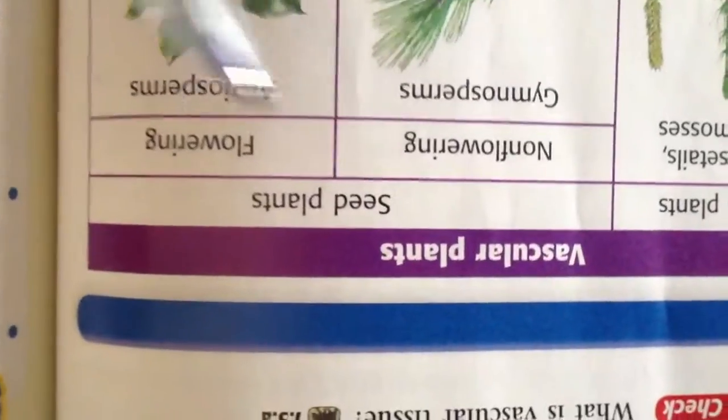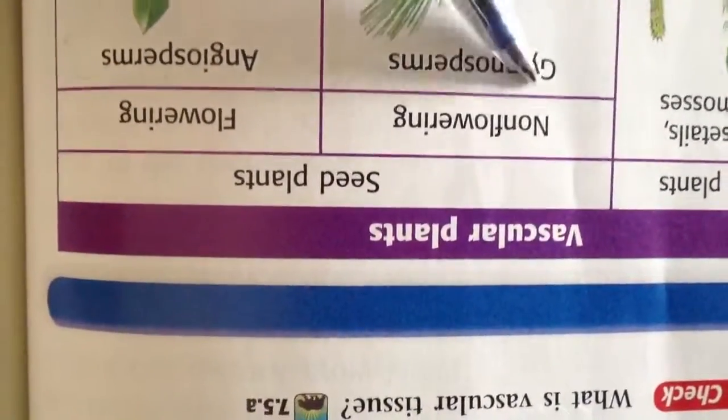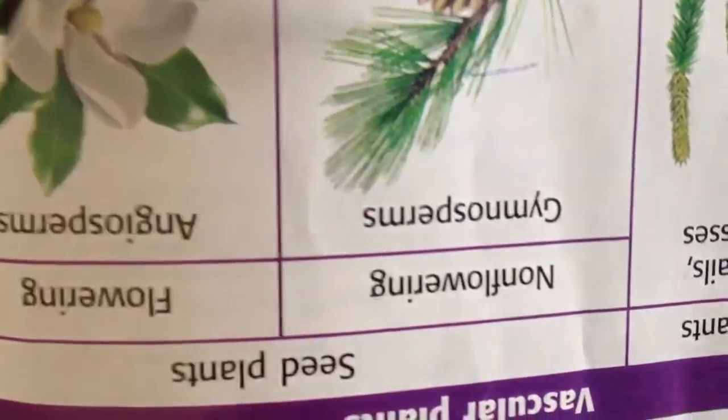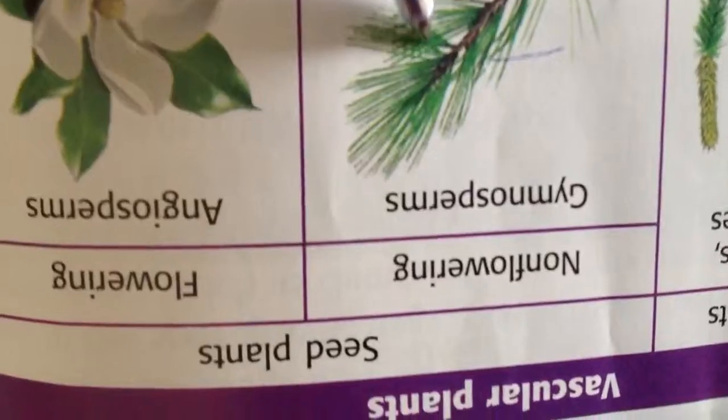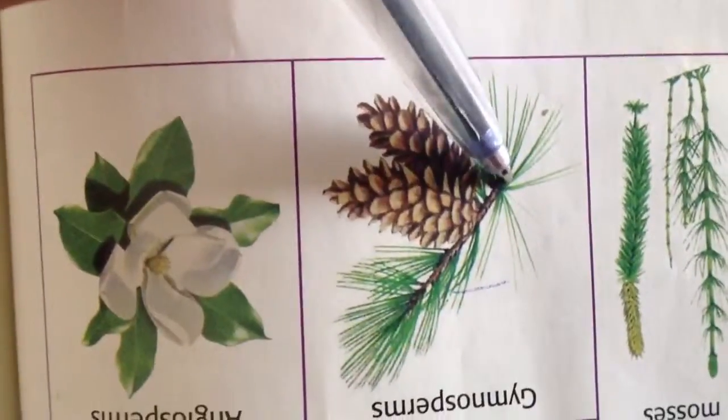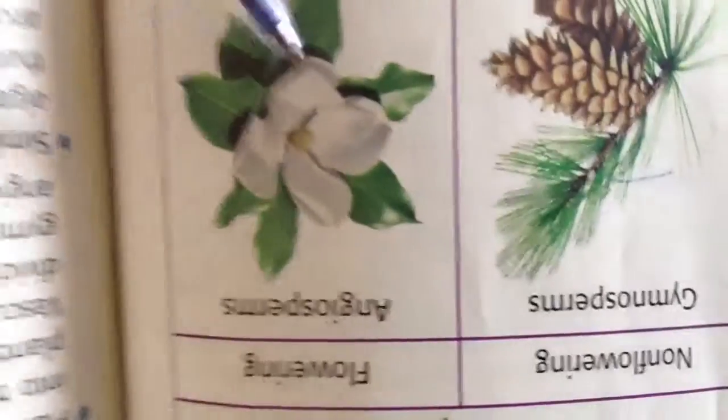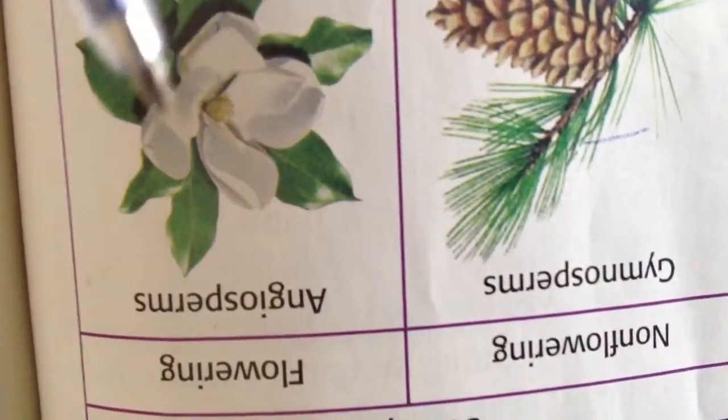Seed plants, they have two types of plants. They have non-flowering and flowering. They have no seed, they have seed but they have no fruit. But here have both seed and fruit.